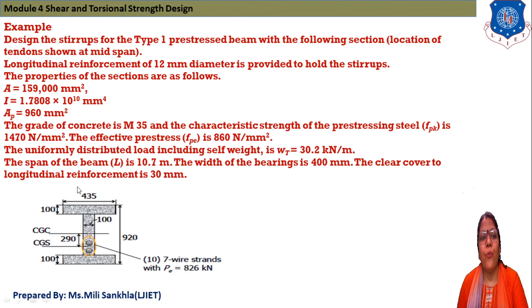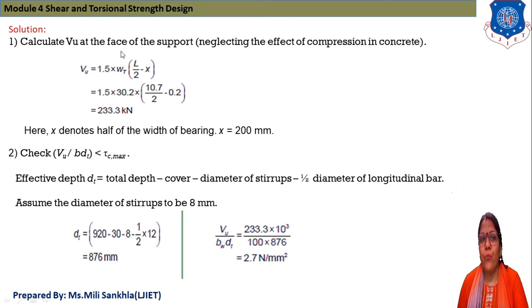Area of prestressing steel equals 960 mm². Grade of concrete is M35 and characteristic strength of prestressing steel fpk is 1470 N/mm². Effective stress fpe equals 860 N/mm². The UDL load is 30.2 kN/m, span is 10.7 m and width of bearing is 400 mm. Clear cover of longitudinal reinforcement is 30 mm. This is the I-section.